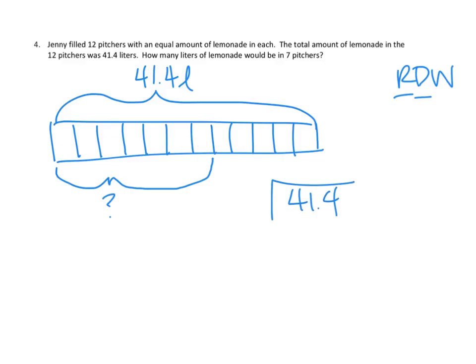I think what we need to do is figure out how much is in one liter, or one pitcher. And once we know how much is in one pitcher, then we can just multiply that by seven and get this. So, I think we just have a division problem and then a simple multiplication problem. So, let's see. We have our whole, which is 41.4, and we have 12 pitchers.